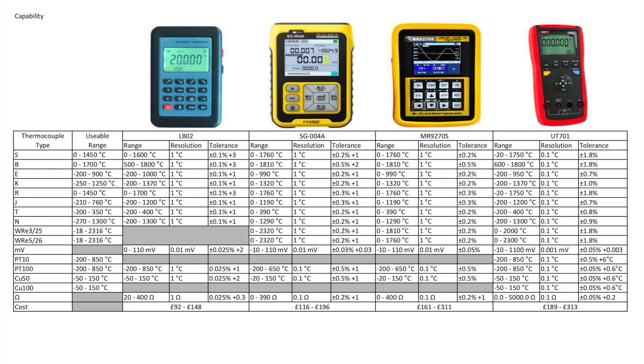However if we look at the tolerance on paper that's quite a significantly different tolerance that the UT701 is showing there. Now I believe tolerances on the smaller process calibrators there are without the cold junction temperature units included, which is included the UT701 there. So that may be accounting for some of the differences.